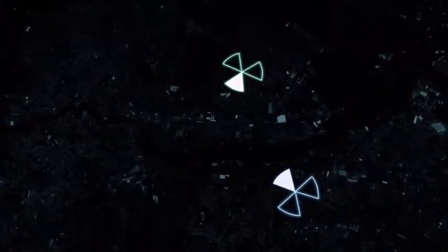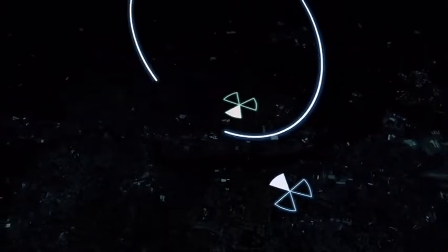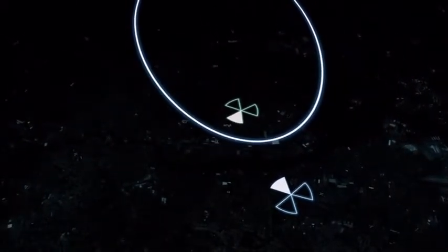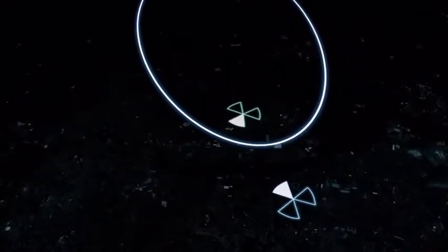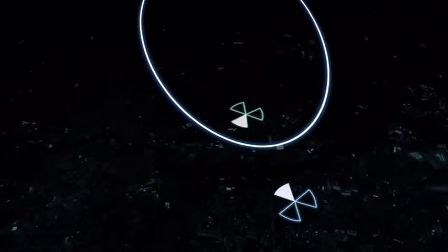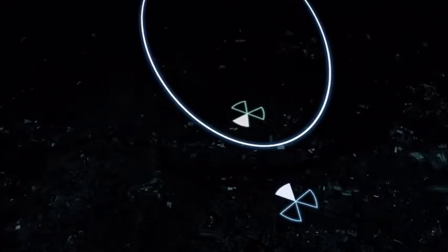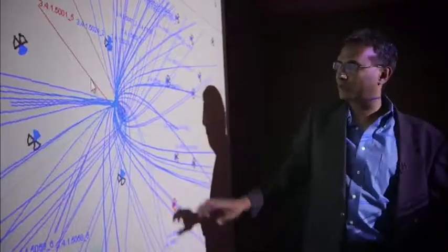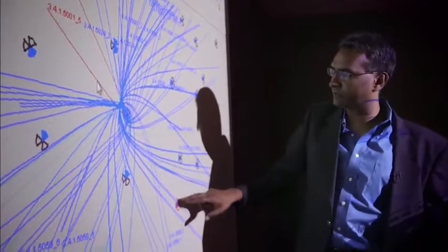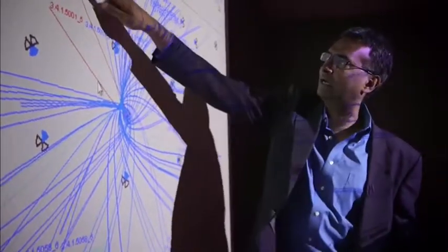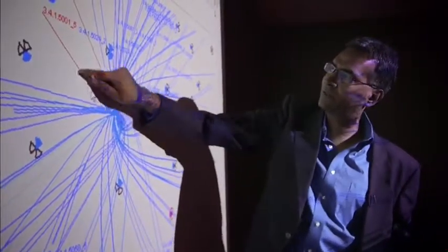Tracking technology plots the points on a map that would create that precise delay. The potential locations fall on a curve. Between any two towers, a time difference is spelled out by a curve. So with just that single measurement between these two towers, all we can tell is that the phone is somewhere on this curve.